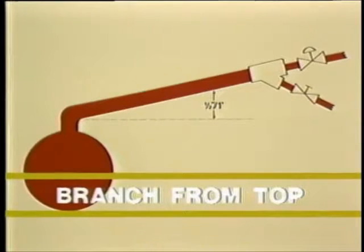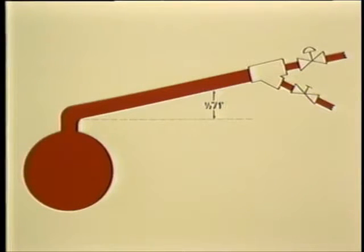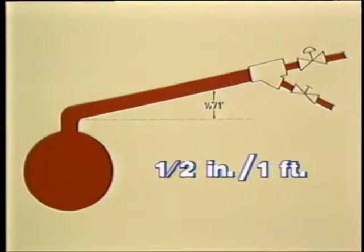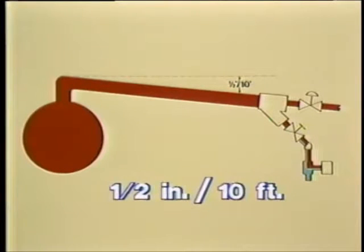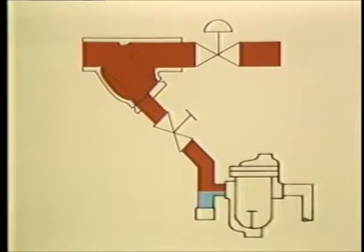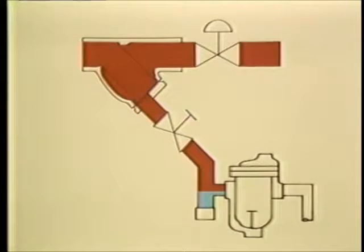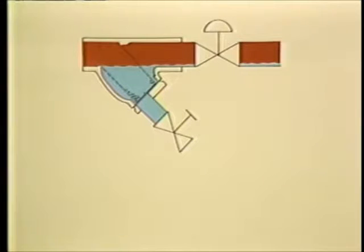Branch piping, or runouts from the steam main, should always be taken from the top of the main. Runouts of less than 10 feet can be pitched up from the main at one half inch per foot and do not require a drip trap ahead of a PRV or control valve. If the runout is more than 10 feet, it should be pitched down from the main, with a strainer and drip trap installed immediately ahead of an automatic control valve or PRV. One practical recommendation is to install the drip trap on the blow-down connection of the strainer ahead of the valve. This arrangement will automatically blow down the strainer while providing the necessary drainage of condensate.